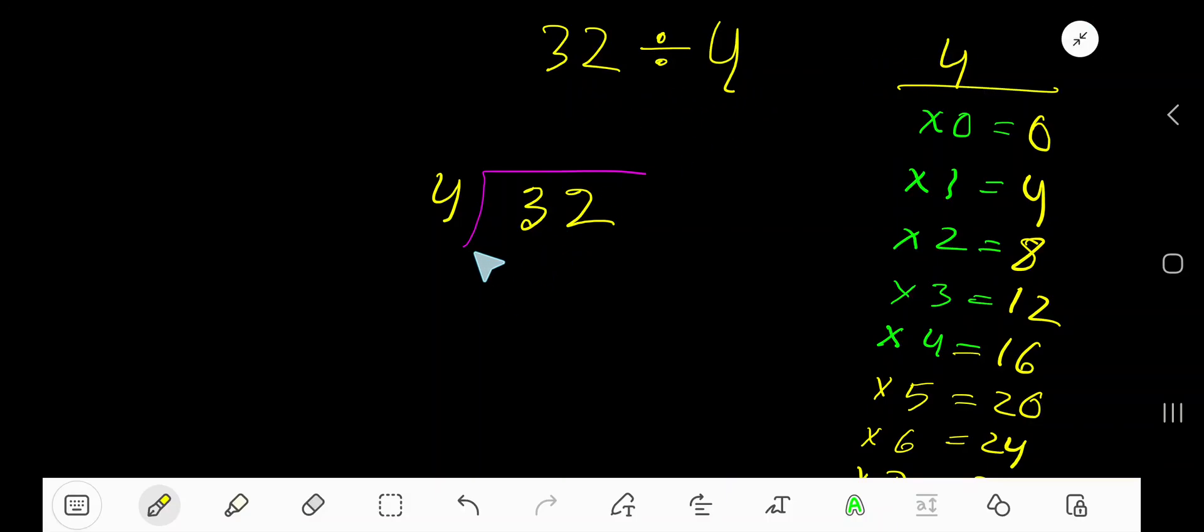32 divided by 4. Here 4 is a divisor, so we need the multiplication table of 4. How to get the multiplication table of 4 easily?